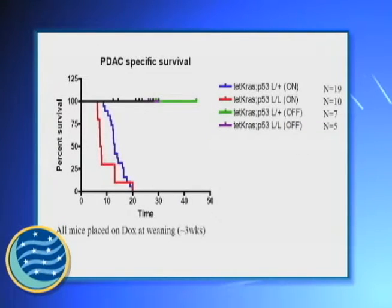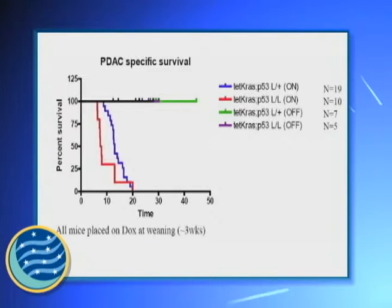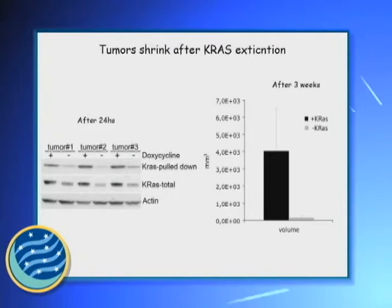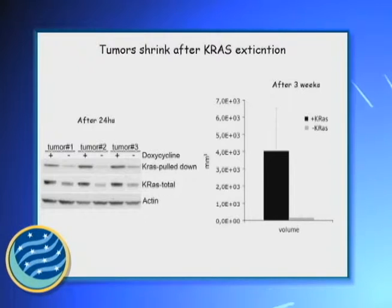We switched off KRAS in this tumor. After a few weeks, the tumor undergoes an amazing reduction in volume — a total regression — and at the end there are just scarce epithelial cells inside the stroma.